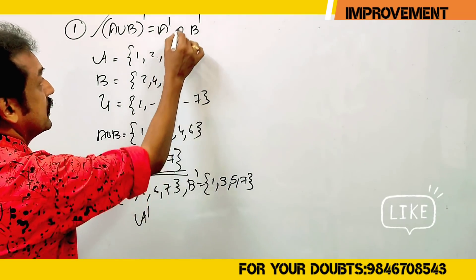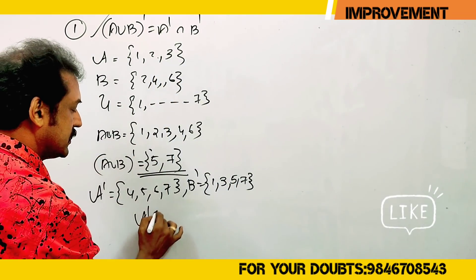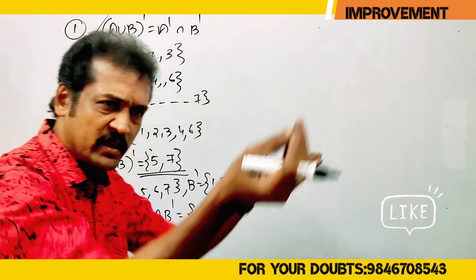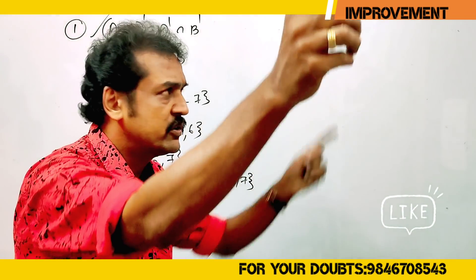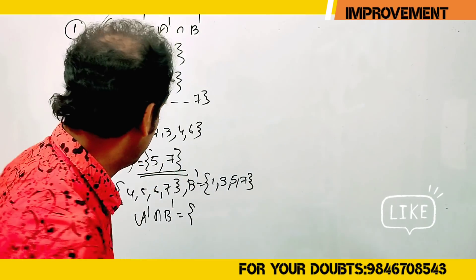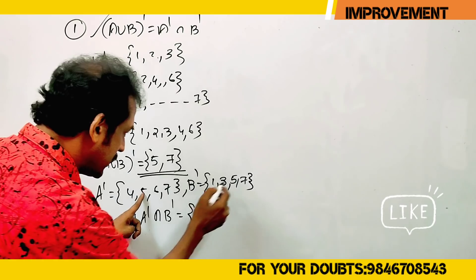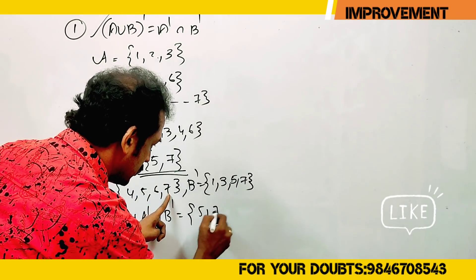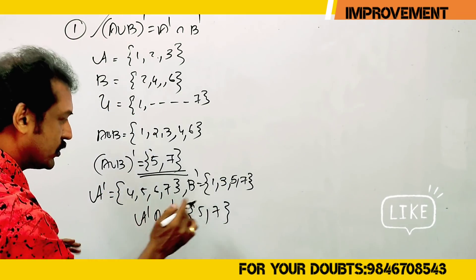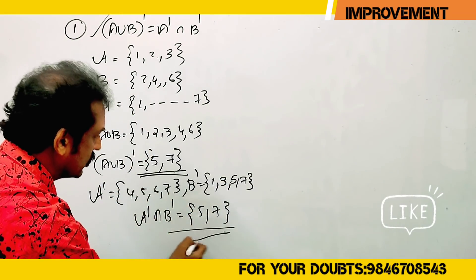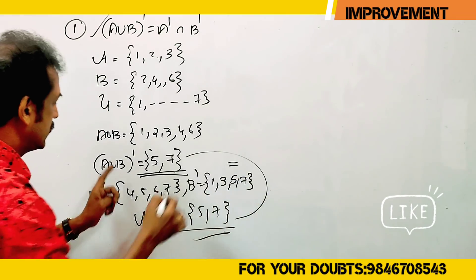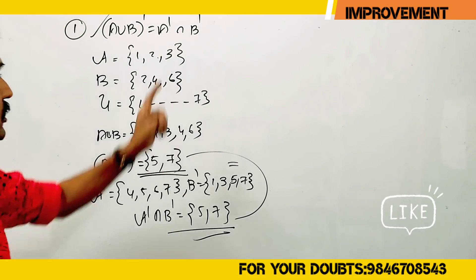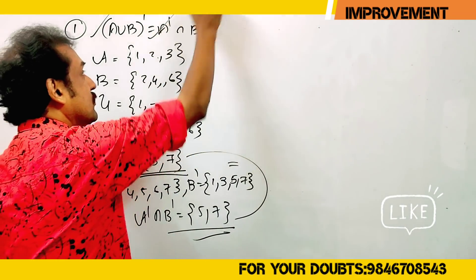Then A complement intersection B complement. The intersection gives the common elements. Because the same result is very clear, therefore the result is verified — the left hand side equals the right hand side.